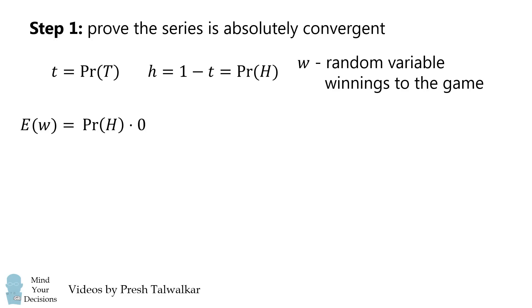If we toss a heads, we'll get 0. If we toss a tails and then a heads, we'll get 1. If we toss two tails and then a heads, we'll get 2. And this pattern continues.